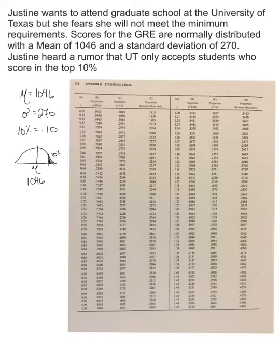So 10% equals 0.10 as a decimal. This is the tail part of the distribution, and this is the body — the body is really big but the tail is super tiny. We're concerned about this area right here, because she wants to know what score she needs to be in the top 10%.